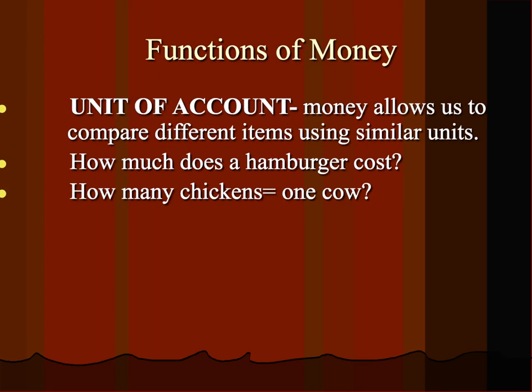Unit of account is the second function of money. Money allows us to compare different items using similar units. How much does a hamburger cost? You know about how much money that is. Using an older idea — how many chickens equals one cow? You probably don't know how much a chicken is worth or how much a cow is worth. But even if you did, it would still be difficult to figure out the units. What if I only have five chickens and it takes 20 chickens for a cow? What part of the cow does five chickens buy me — a leg, a hoof, the head? Money just makes things easier.